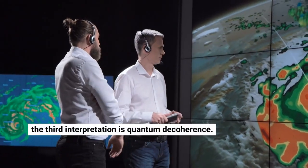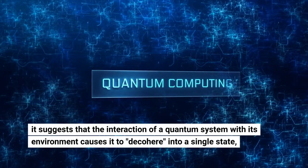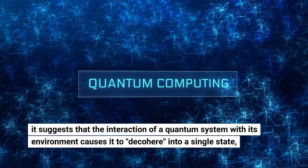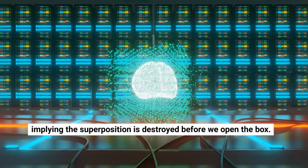The third interpretation is quantum decoherence. It suggests that the interaction of a quantum system with its environment causes it to decohere into a single state, implying the superposition is destroyed before we open the box.